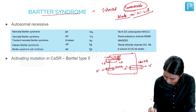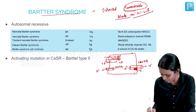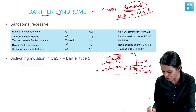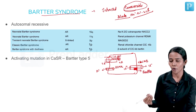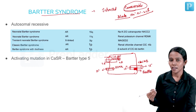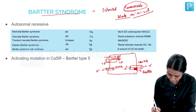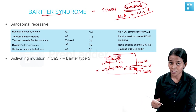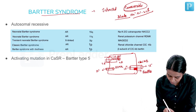For CLCNKB to act, it requires the help of a subunit called Barttin. Each deficiency or defect in these channels can cause Bartter syndrome.